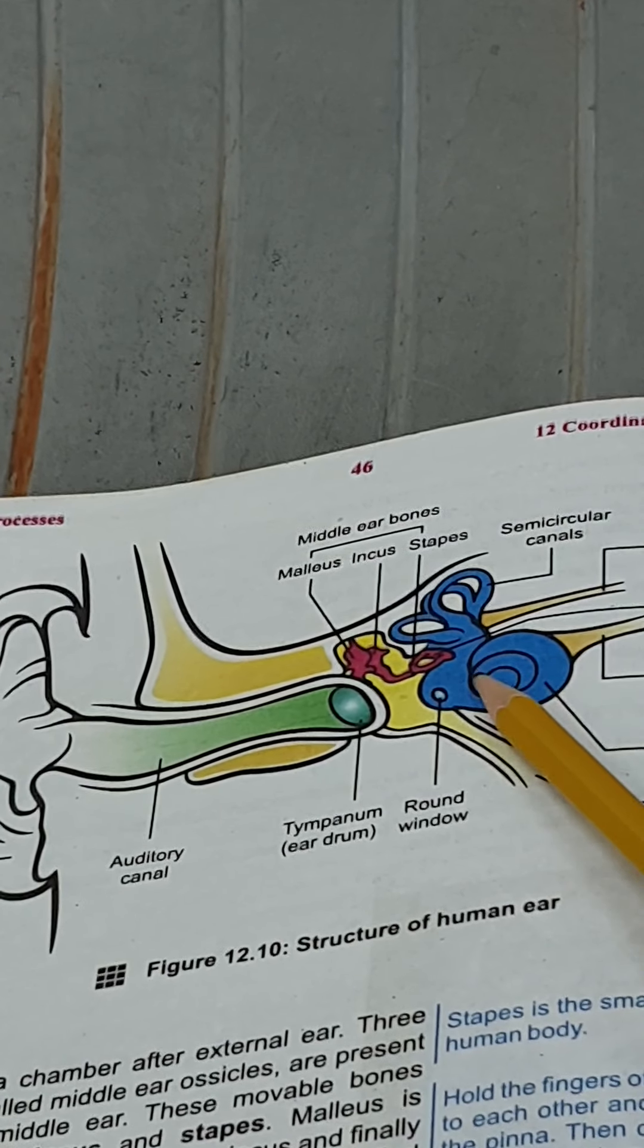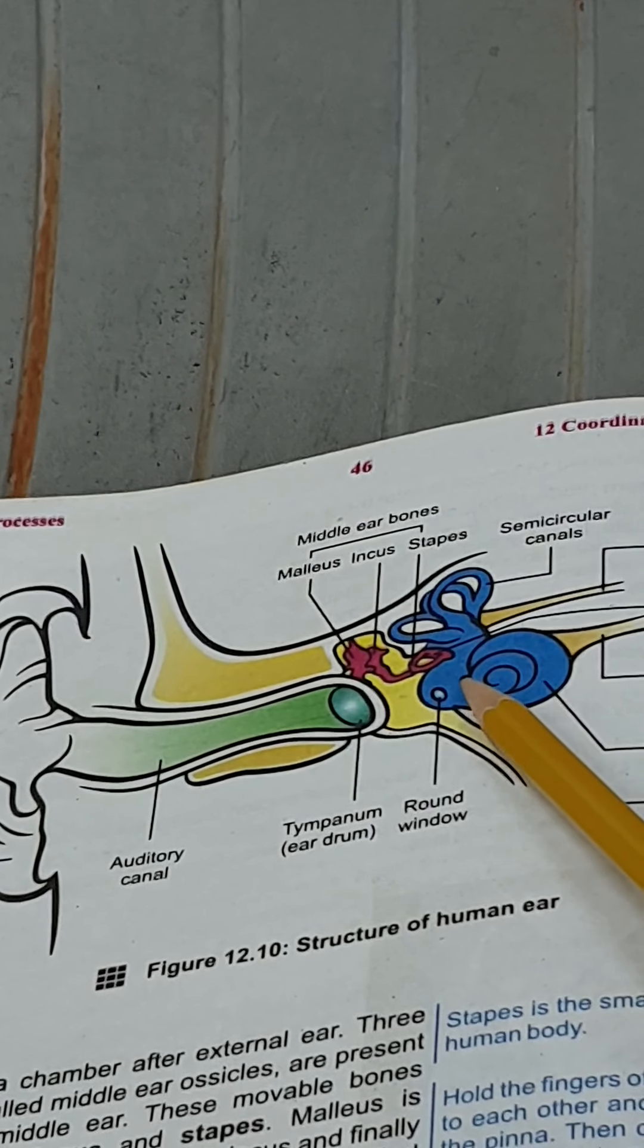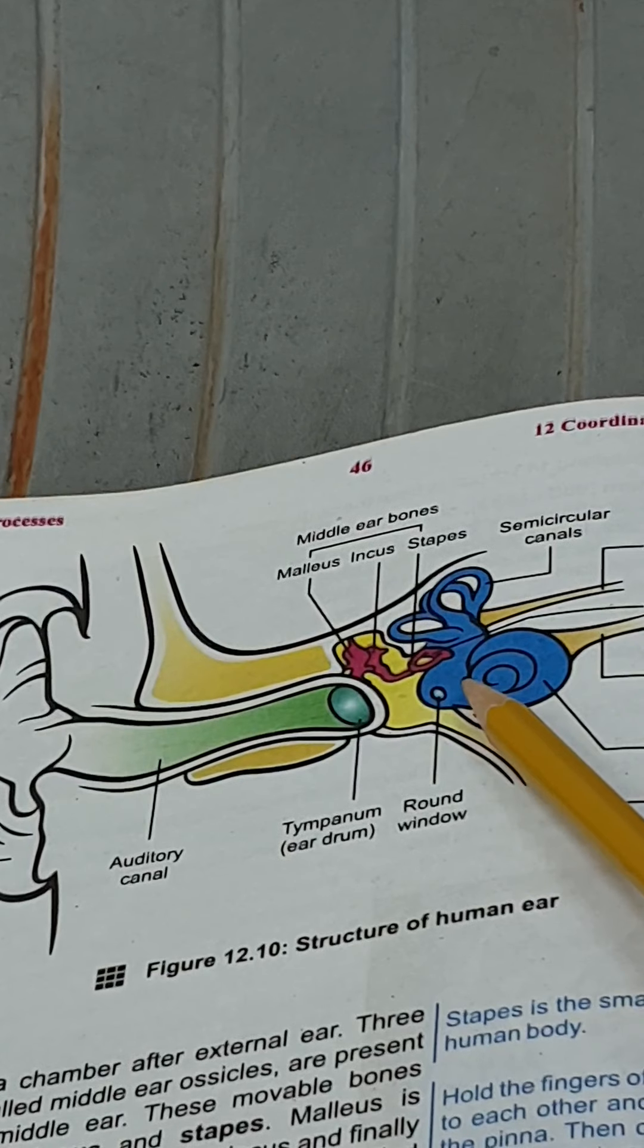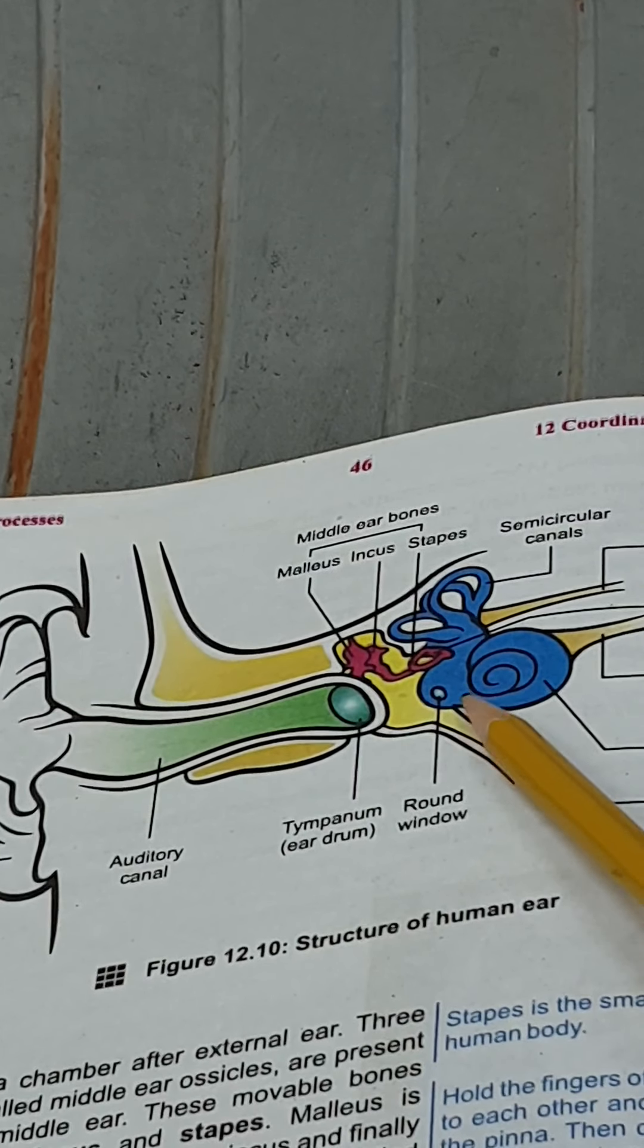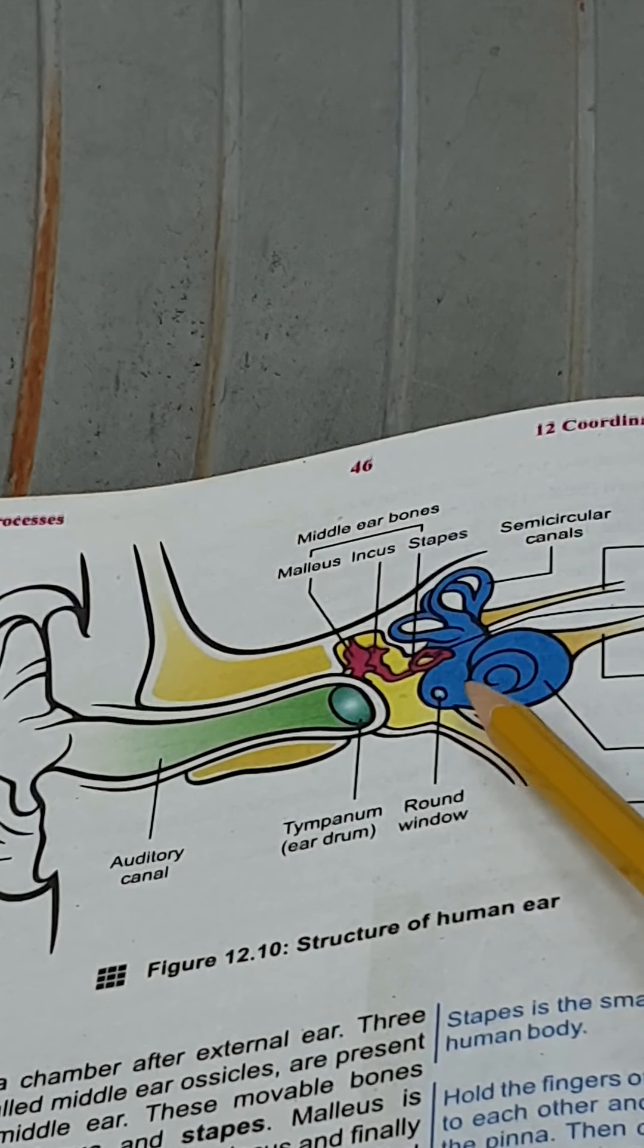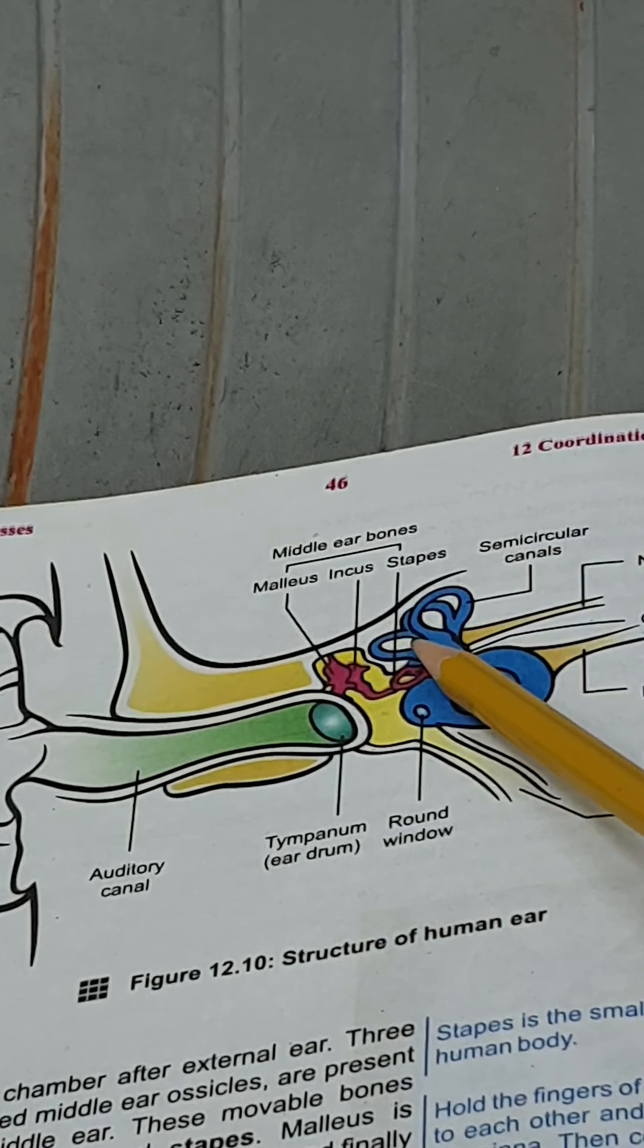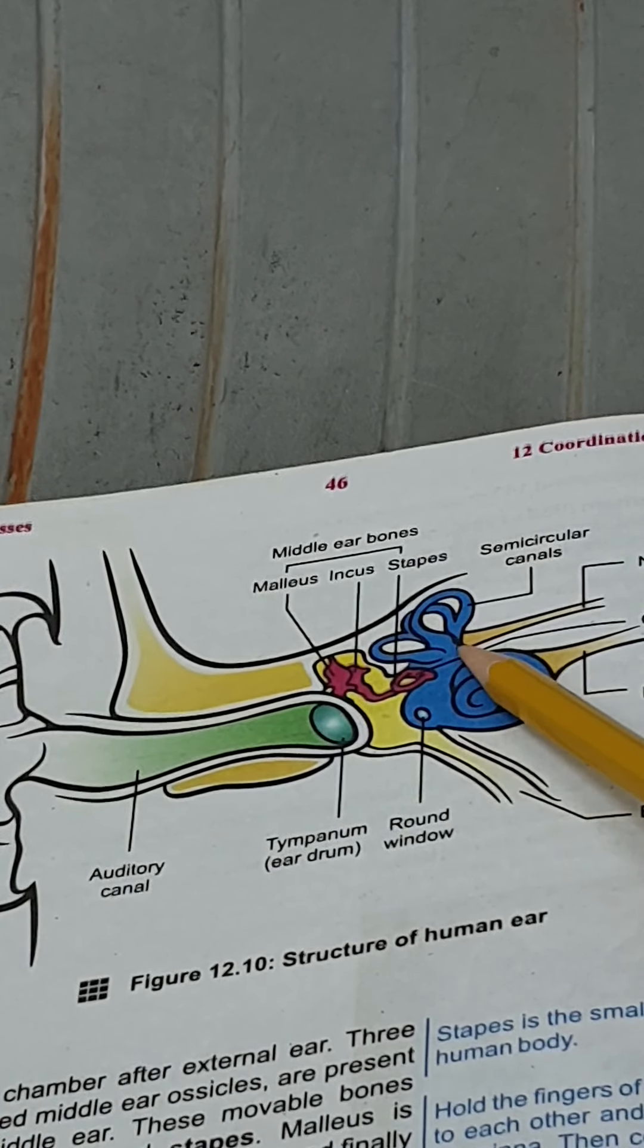The next function of the ear is body balance, body posture, and equilibrium. It detects the movement of our body and gives us information about the posture of the body when our body moves. For that, there are two parts: the semicircular canal and vestibule.